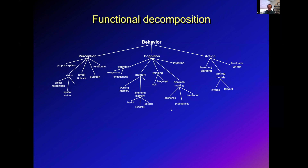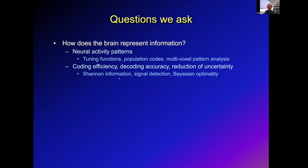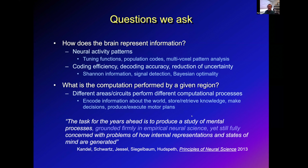This is a very impoverished sketch of how we think about behavior, but the particular concepts define the questions we ask and the domains we study. For example, I study decision-making; others might study attention or working memory. The questions we ask are: how does the brain represent information through neural activity patterns? How does it achieve coding efficiency, decoding accuracy? What is the computation performed by a given region? Does some region encode information about the world, store and retrieve knowledge, make decisions? The task is to produce a study of mental processes concerned with how internal representations and states of mind are generated by the brain — a quote from the major textbook in neuroscience. So the task is to understand the functions of different brain regions or circuits in terms of specific computational functions.